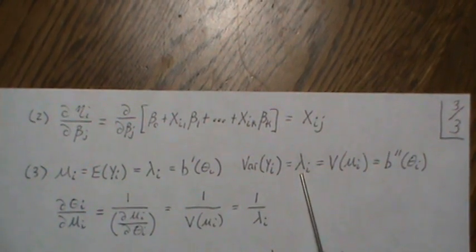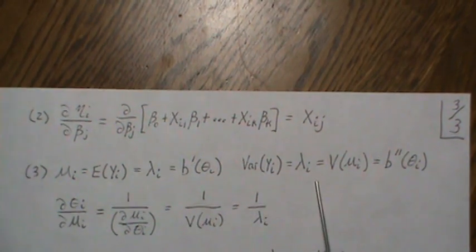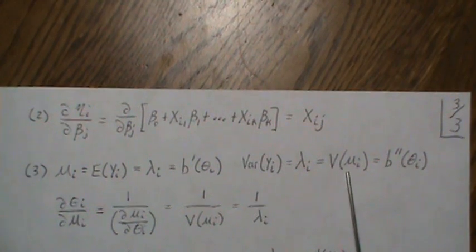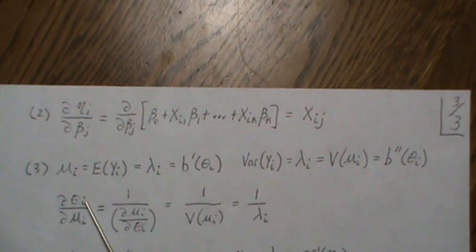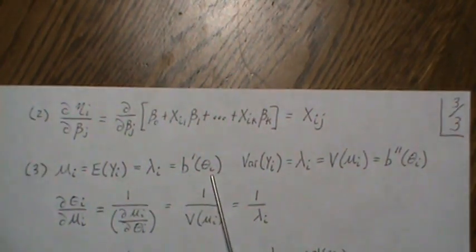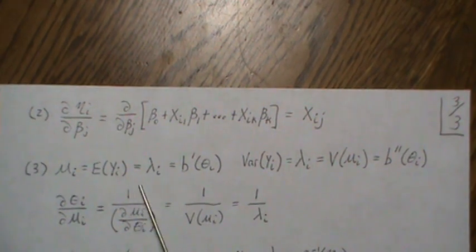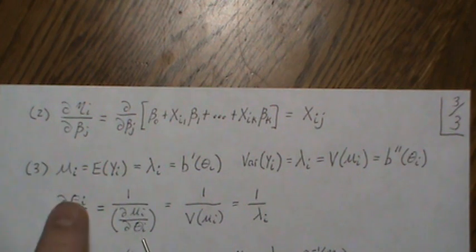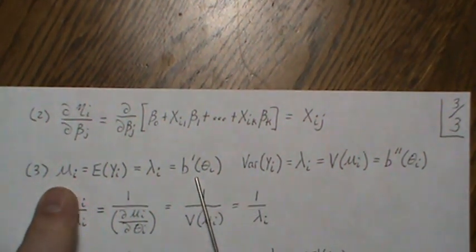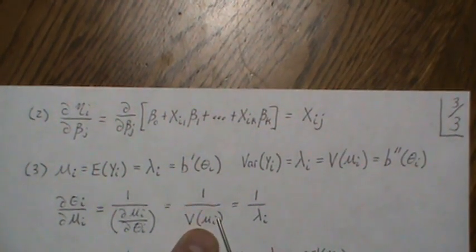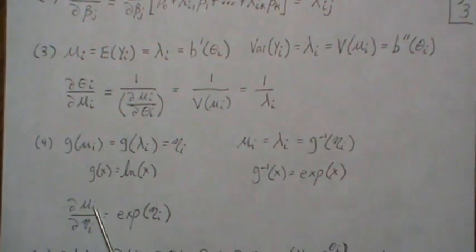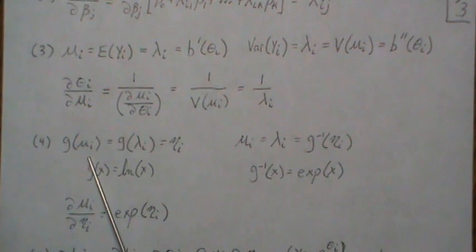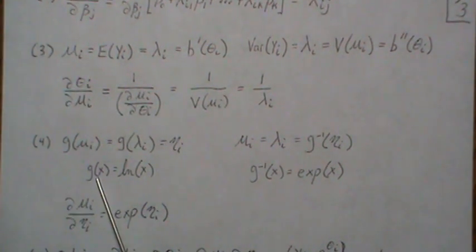The variance of Y_i is lambda_i — this is a function of the mean, generically called the variance function in the GLM structure, and it's also the second derivative of the log partition. When we take the partial of theta_i with respect to mu_i, since b is invertible we can think of it as the reciprocal of the partial of mu_i with respect to theta_i, which is one over the second derivative of our log partition — that is, one over lambda. Step four: the partial of mu_i with respect to eta_i. We know the link function of our mean is the linear combination, with link = log, so mu_i equals the inverse link, which is exponentiation. The derivative of e^{eta_i} with respect to eta_i gives e^{eta_i} back.